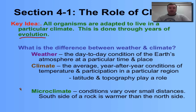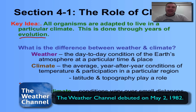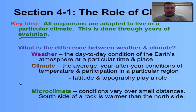So what is our definition of weather? Weather is the day-to-day condition of the Earth's atmosphere at a particular place and a particular time. For example, when you pull out your smartphone and pull up the weather app, it tells you what's going on right now where you live. That's the weather.